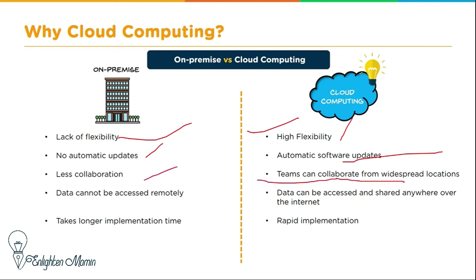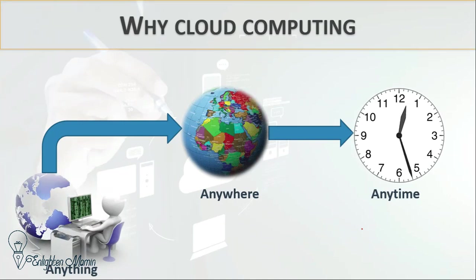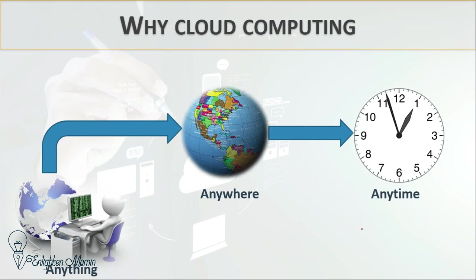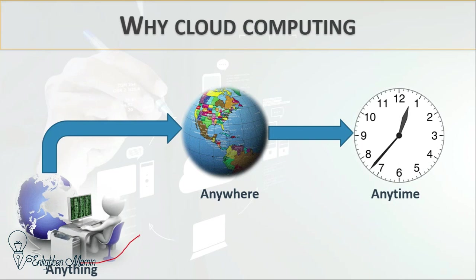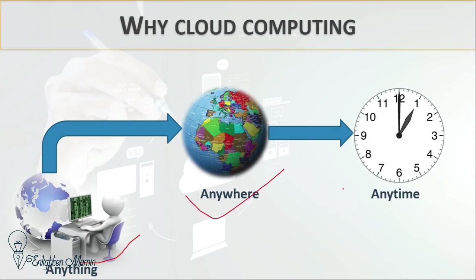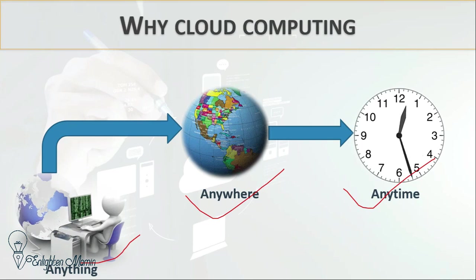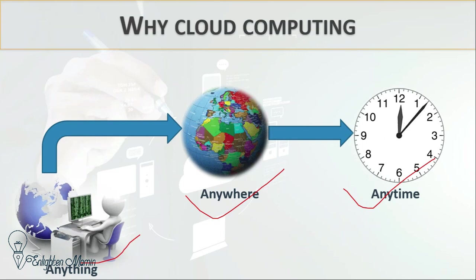With on-premise, data cannot be accessed remotely and it takes longer implementation time. With cloud computing, data can be accessed and shared anywhere over the internet. The slogan of cloud computing is: anything, anywhere, anytime — any type of data, any type of information, accessible from anywhere in the world, at any time, over the internet.